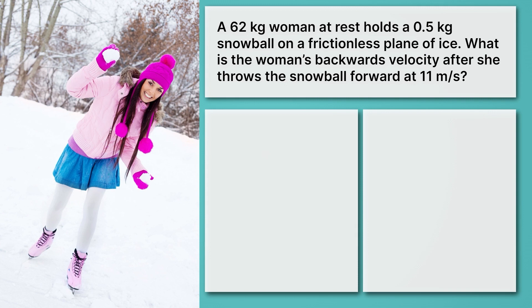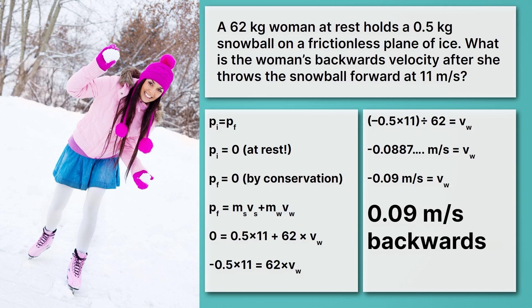Now it's your turn. A 62-kilogram woman at rest holds a 0.5-kilogram snowball on a frictionless plane of ice. What is the woman's backwards velocity after she throws the snowball forward at 11 meters per second? Go ahead and pause the video and see if you can solve this problem. We started with conservation of momentum, knowing that the initial and final momentum had to both be zero, and that the final momentum was equal to the momentum of the woman and the snowball added together, which ultimately let us solve for the velocity of the woman as 0.09 meters per second backwards.